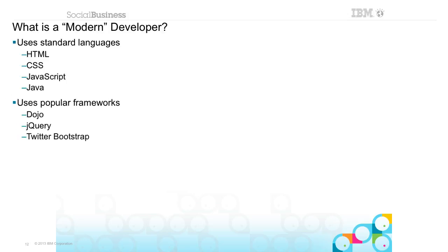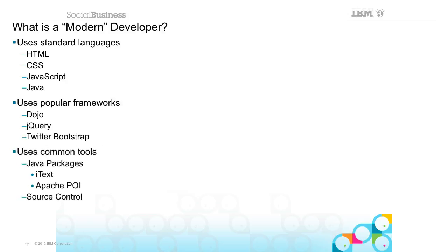A modern developer also uses popular frameworks. There's a lot of code out there that's already been written for you, so why not use it to make your applications better and make your life easier? XPages already comes with the Dojo framework out of the box, and I believe 9.0 beta has Dojo 1.8 in it. But you can use other things like jQuery and Twitter Bootstrap. The modern developer also uses more common tools like iText for creating PDFs or Apache POI for Excel and Word files.